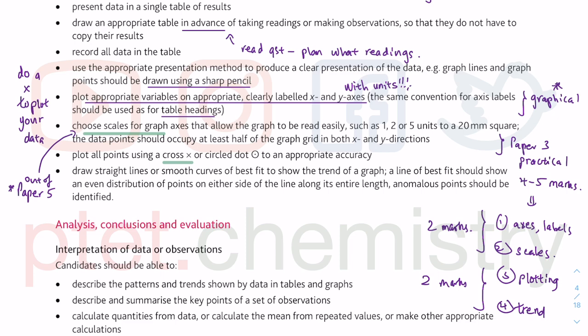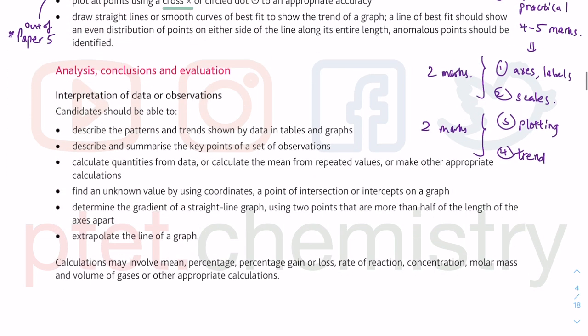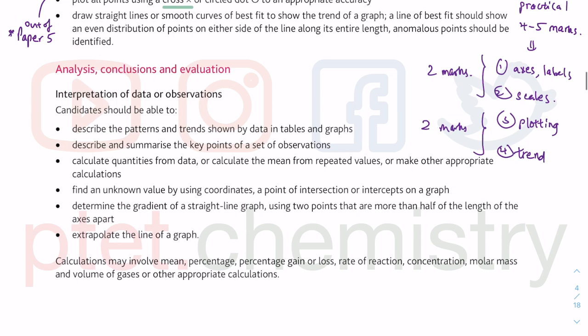Plot all your points using crosses or circle dots. Most papers these days are scanned and marked on screen by people around the world, so you want to use a cross or circle dot to appropriate accuracy. Make sure you can read a graph very quickly — if you lack this skill, you should practise by doing some Paper 5 question number two on data analysis and plotting graphs. Draw a straight line or smooth curve depending on the trend of a graph — remember a line of best fit could be a straight line or a curve.